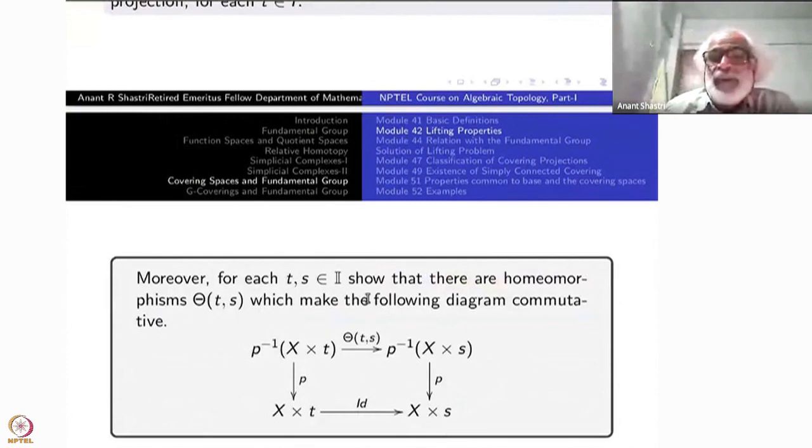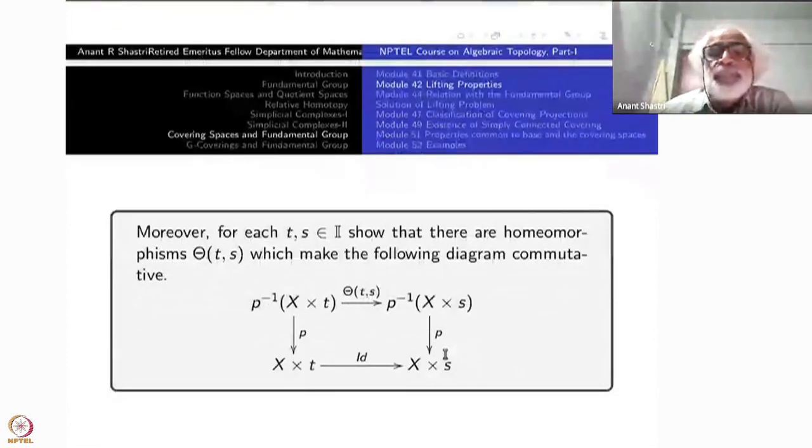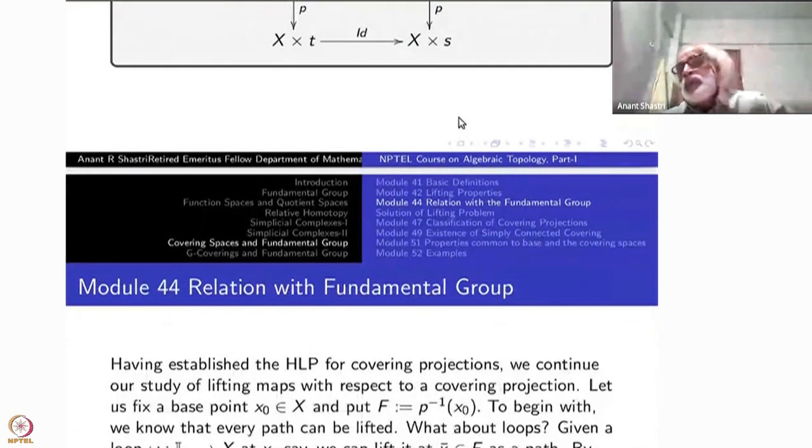For each t comma s belonging to I, show that there are homeomorphisms depending upon t and s, theta_{t,s} from P inverse X cross t to P inverse X cross s. This is homeomorphism. This is identity map, identity map on X comma t going to X comma s. This map is X comma t, identity cross identity. Whatever. t goes to s. That is the difference here. So such a diagram is possible. This is what you have to show. Looks crazy but you don't need anything more than what you have learned. Don't even need the homotopy lifting property is gone. Just the definition of covering projections. So let's stop here. Thank you.